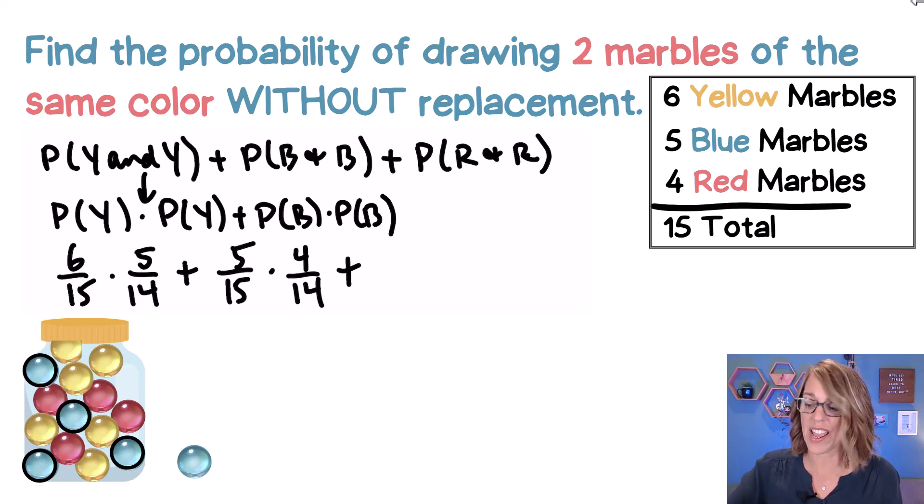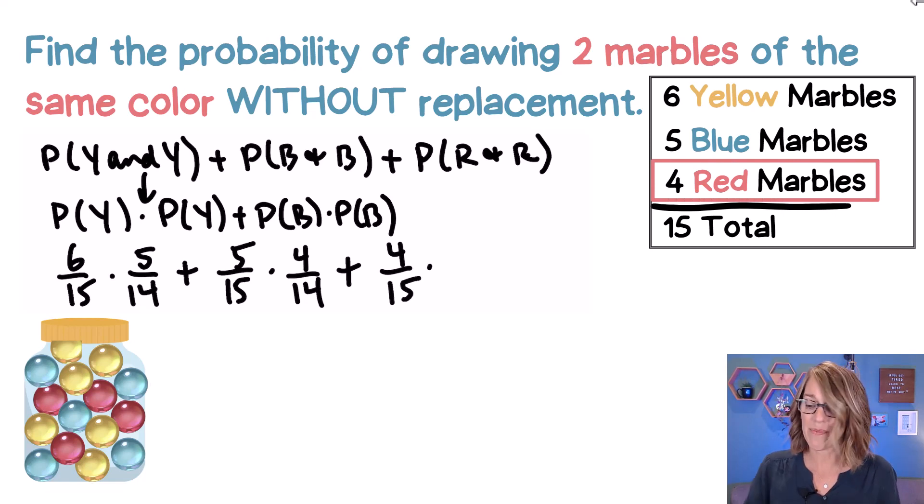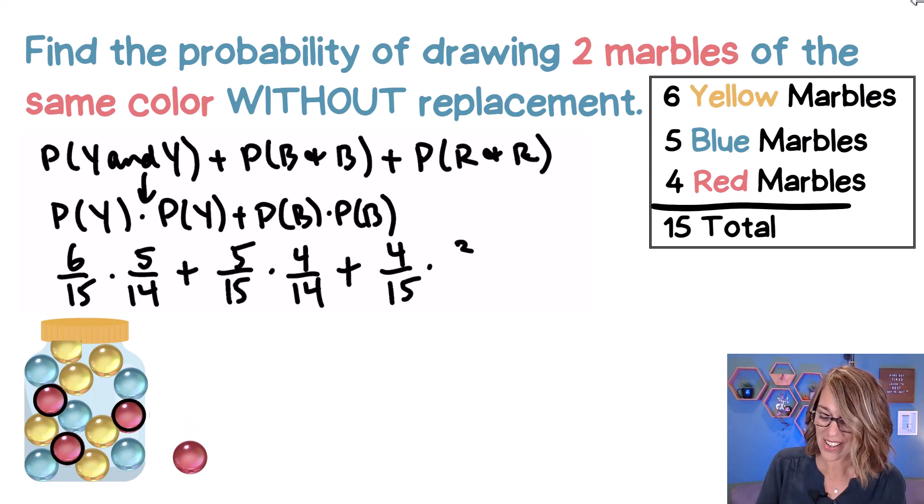Plus finally red and red. I've got to fill that marble jar back up, but when I go to draw that first red, there are four of them to choose from. So four out of 15 times, once I take a red out, there are three of those left, three out of 14.